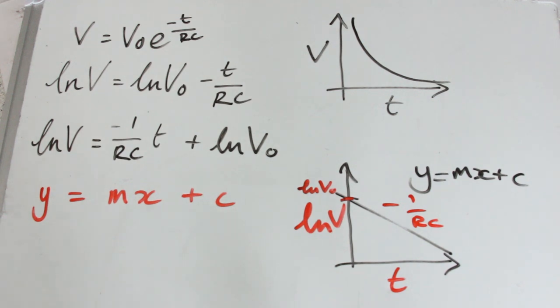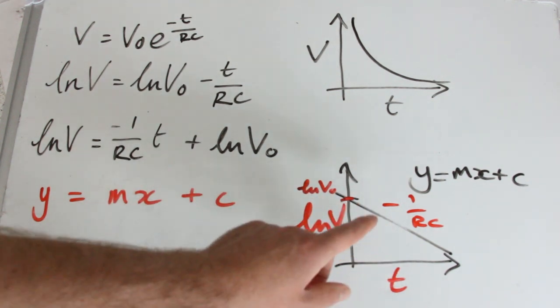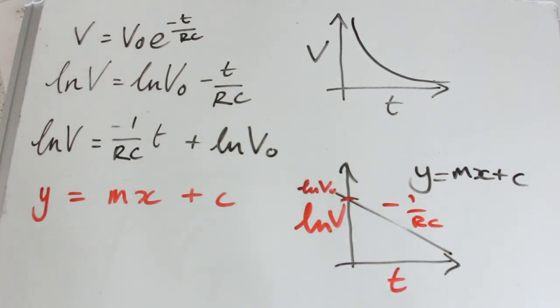Okay, so a very useful thing to be able to do. We can get to this, which is our gradient, which is resistance times capacitance. So very useful to work out what RC is. In other words, the inverse of the time constant.